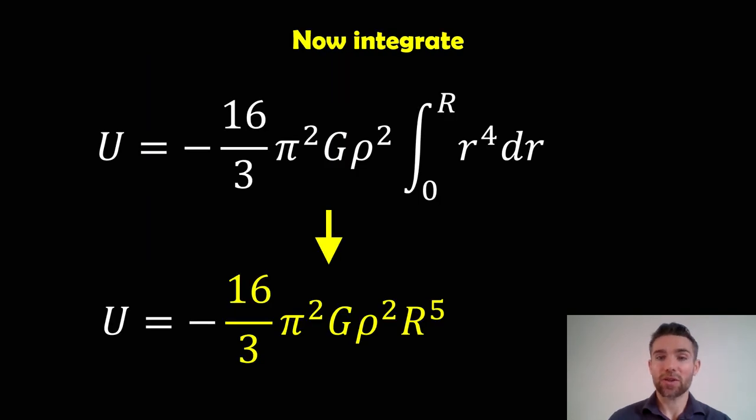Now we can actually integrate between zero and the radius of the sphere, and we get the following for our potential energy, which is not what we want at the moment.